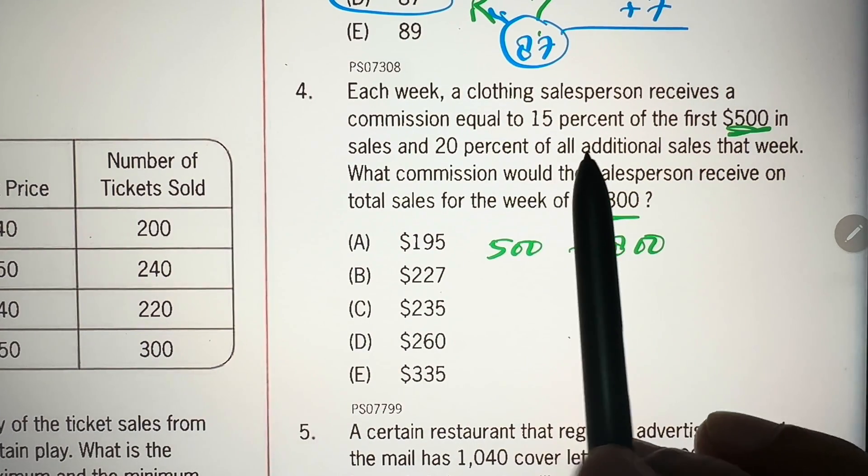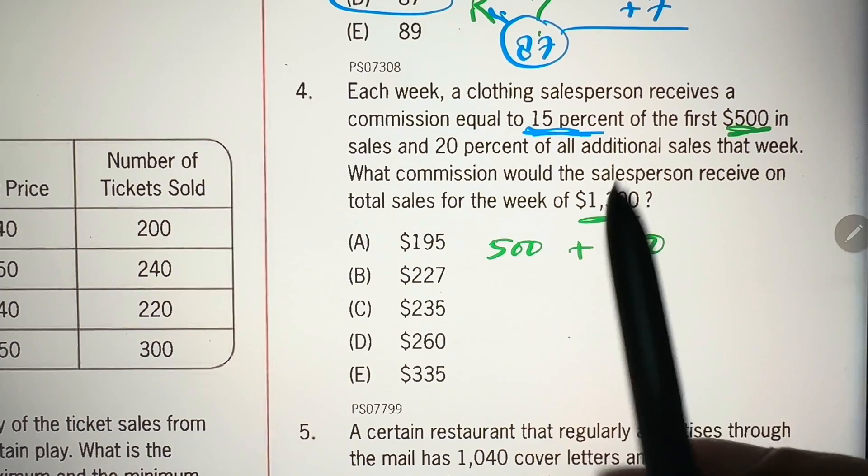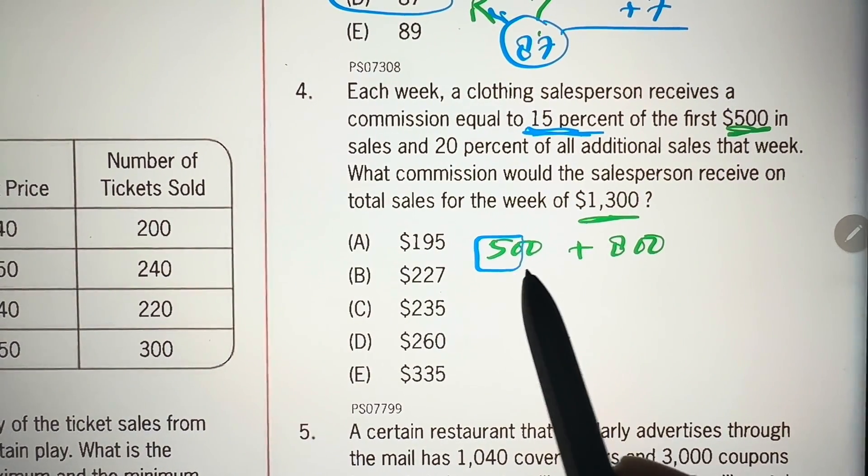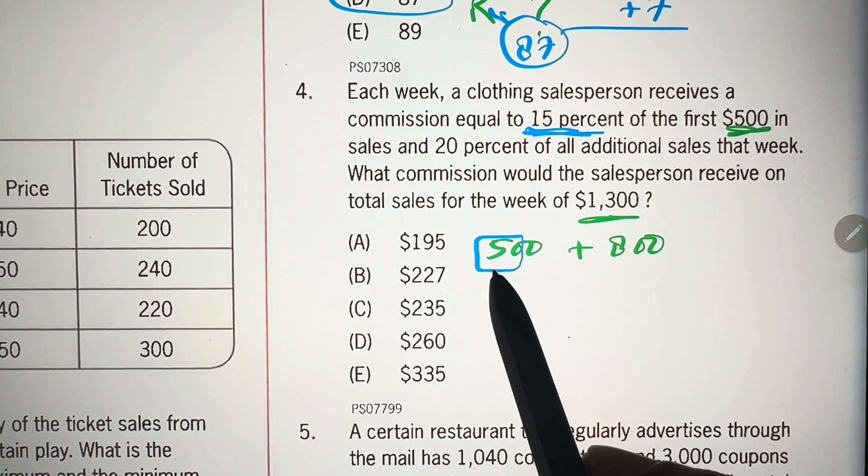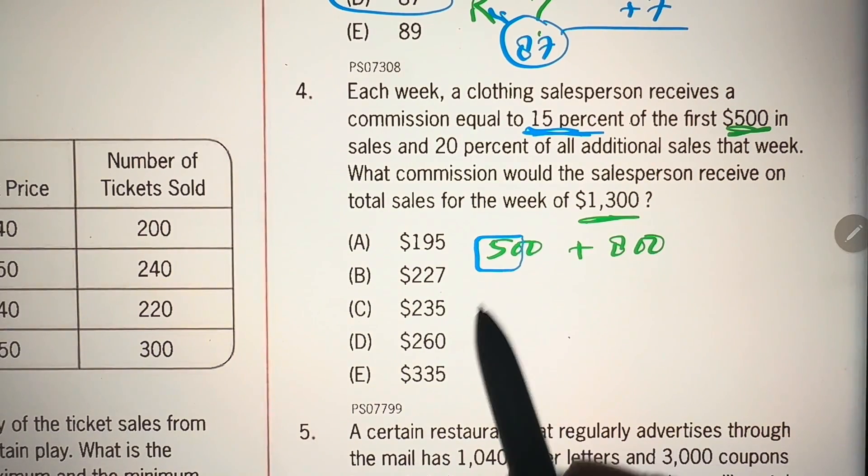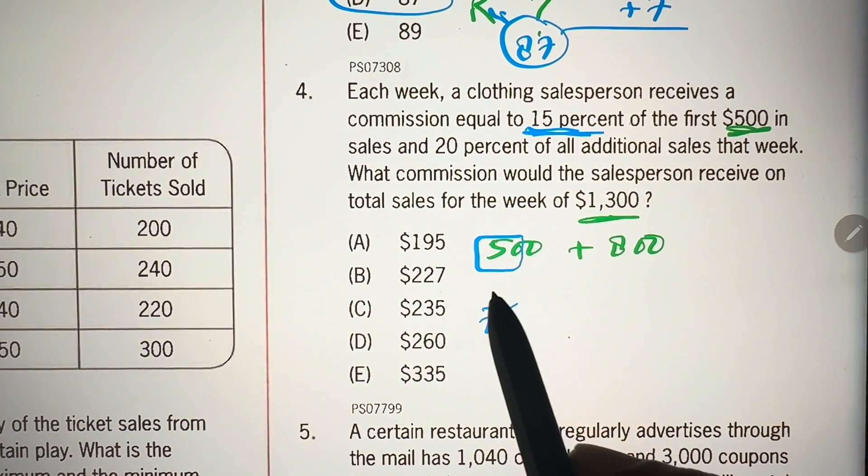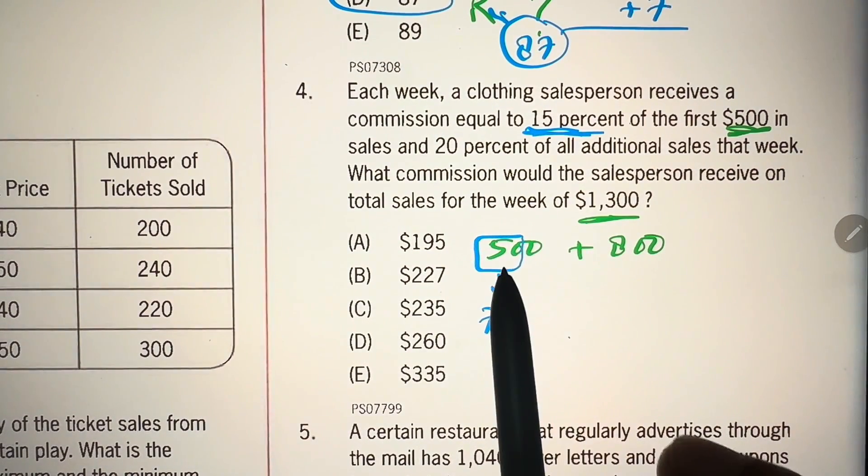the salesperson is earning 15%. So, 10% is 50, 15% is half of 50 is 25. So, 50 plus 25 is 75. That's the commission on this $500.